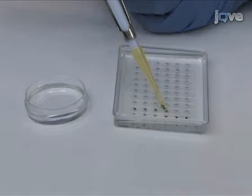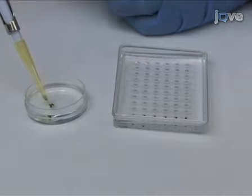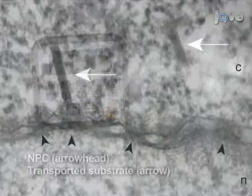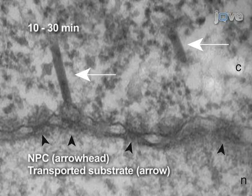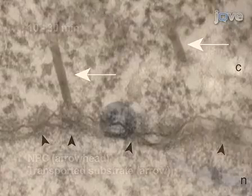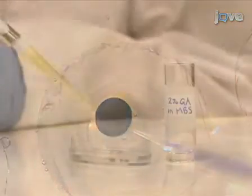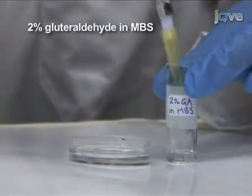When the injections are complete, transfer the oocytes to a 35 mm petri dish filled with MBS. Incubate the oocytes at room temperature for the desired amount of time. Choose time points that allow observation of the import substrate associated with nuclear pore complexes, or NPCs. We typically use time points between 10 and 30 minutes for proteins and viruses that are actively transported towards the NPC. These time points also depend on the site of injection and the size of the protein or virus. When the incubation is complete, transfer the oocytes to a 4 mL glass vial containing 2% glutaraldehyde in MBS and fix overnight at 4 degrees Celsius.